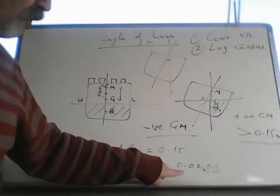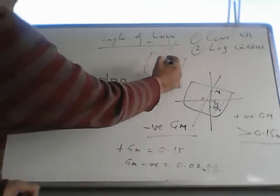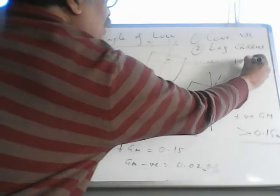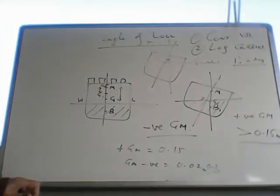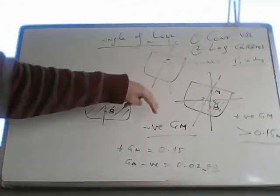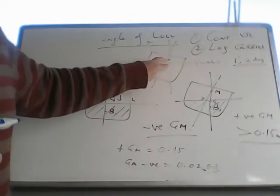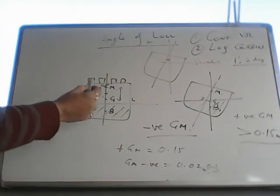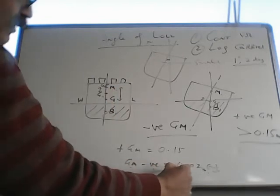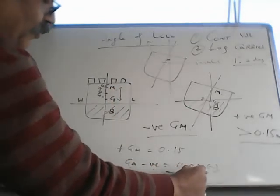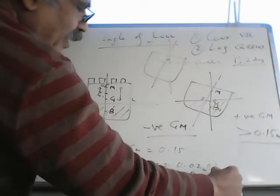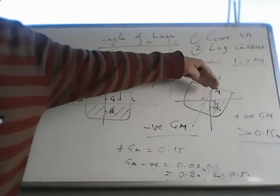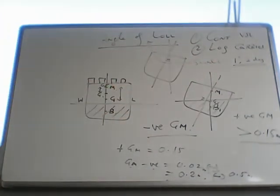Now since your GM was negative, but it was very small, this angle of list will be small - maybe 1 or 2 degrees. So this is not a big problem. Angle of GM was very small, therefore your angle of loll was small. You can survive this list, probably till your next port. But if this negative GM was large, let's say 0.2 meters or minus 0.5 meters, then this angle would be very large and the ship would roll to a very large degree and probably capsize.